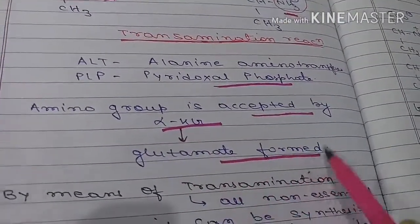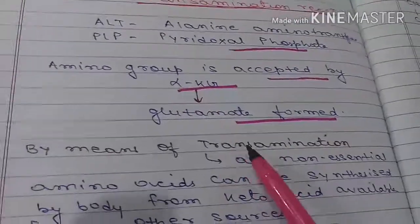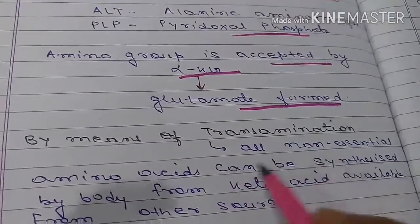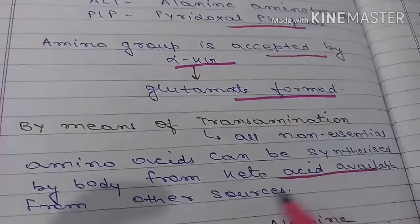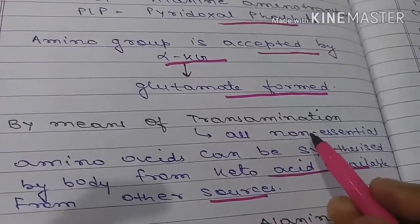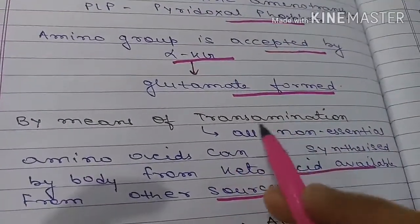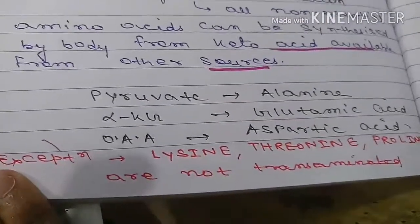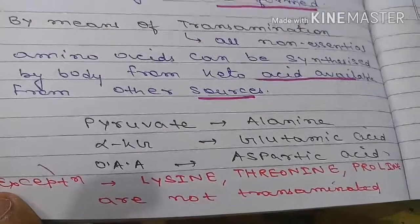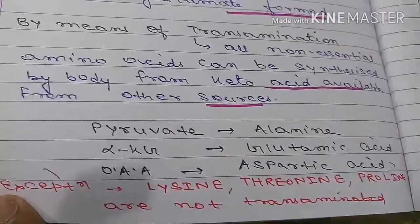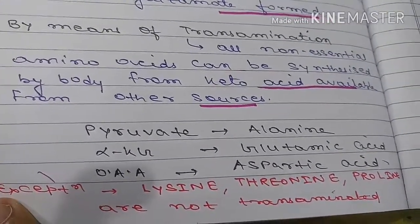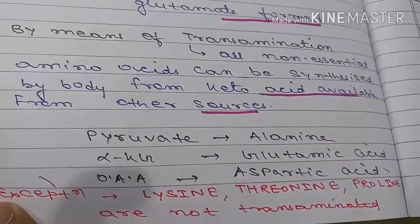The applied part of transamination is that all non-essential amino acids can be synthesized from keto acids available from other sources. For example, pyruvate gives alanine, alpha-ketoglutarate gives glutamic acid, and oxaloacetate can also undergo transamination to form the corresponding amino acid.